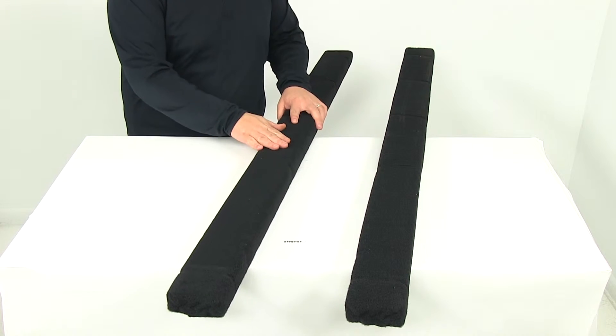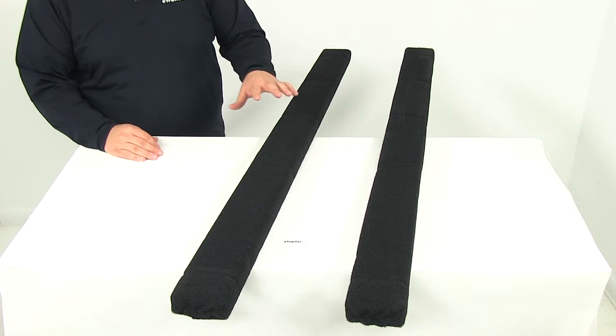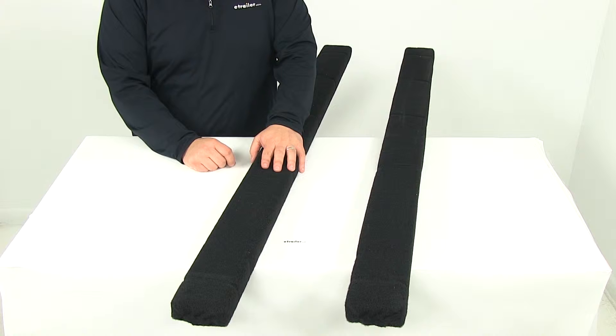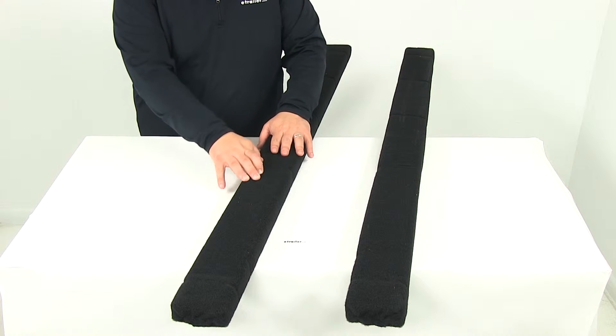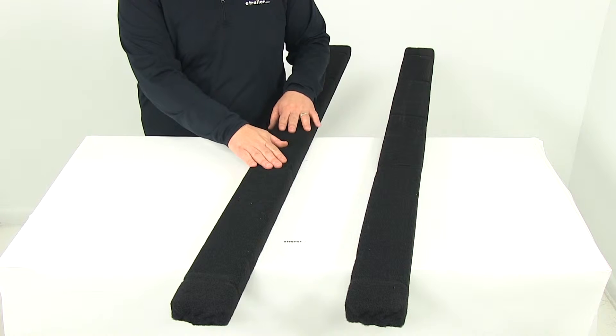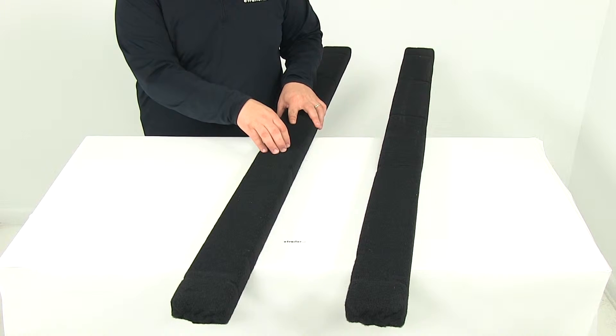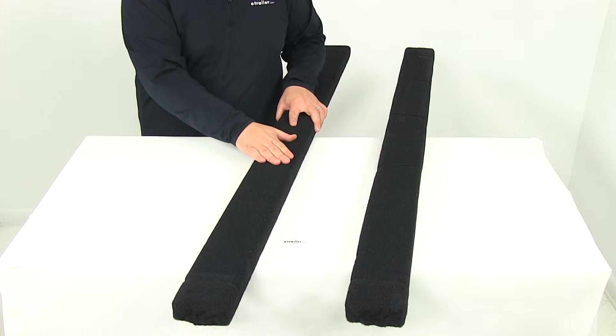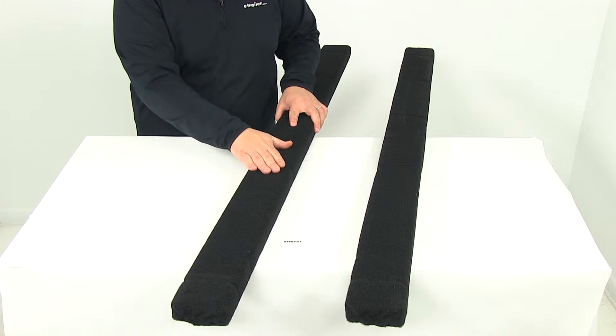Now the neat thing about having the carpet over the boards, this carpet in particular, it's soft and durable. It's marine grade, and it's going to protect the hull of your boat. It's going to minimize scratches. It's also going to help resist mold and mildew. The carpet is going to rinse off very easily and dry really quick.